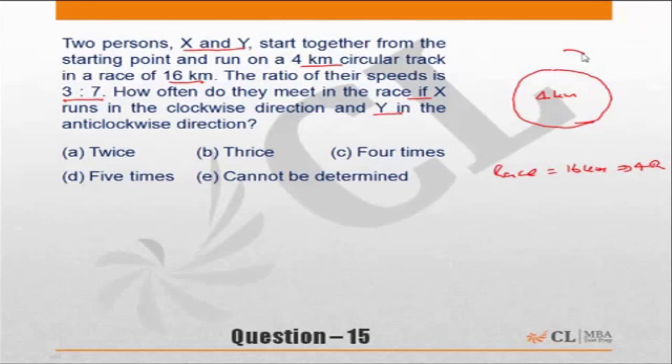X runs in the clockwise direction, Y runs in the anticlockwise direction. The question is how often do they meet? Now if the two of them are running in opposite directions, every time they do one round cumulatively they would have met.